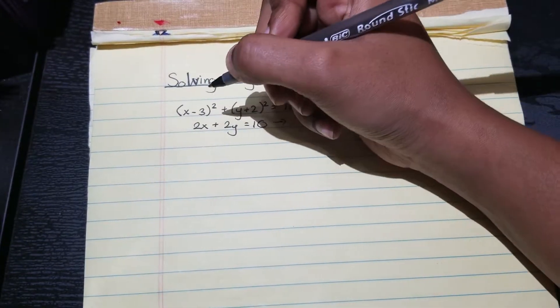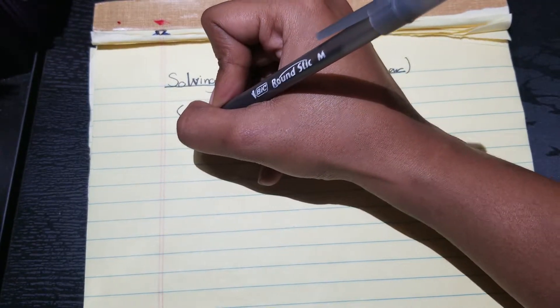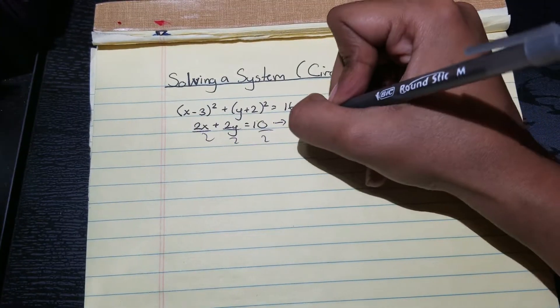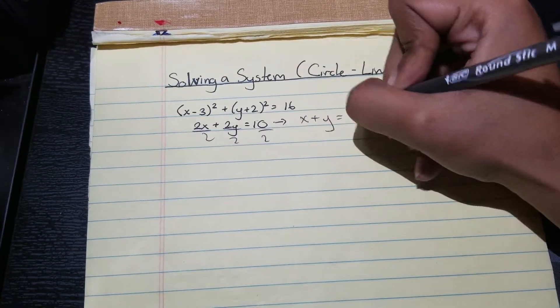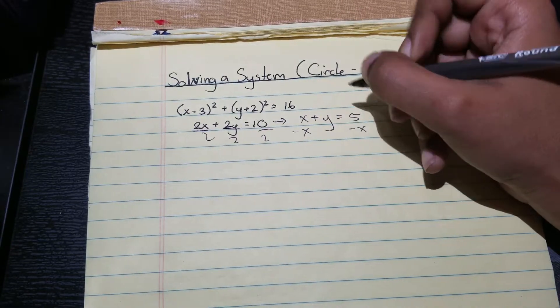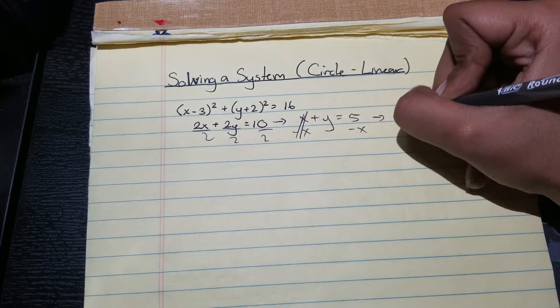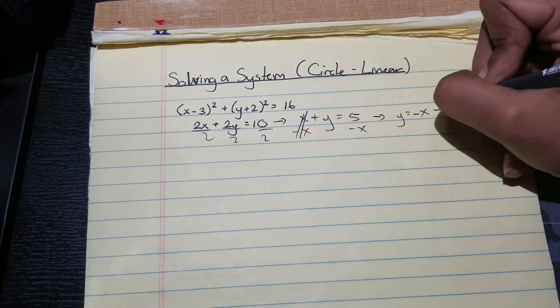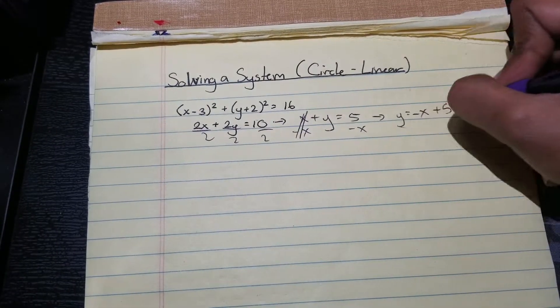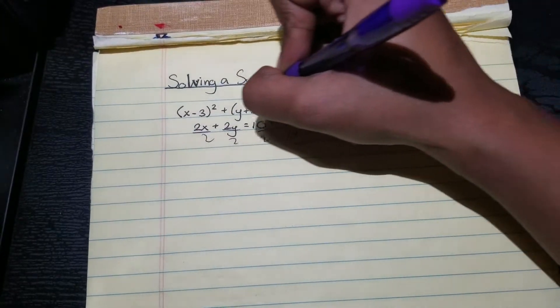So for me, I'm going to substitute the y. So I see that they all have coefficients or numbers that are divisible by two, so I'm going to do that first. Then I get x plus y equals five. And then because I wanted y equals mx plus b form, I'm going to subtract x on both sides, and then I end up with y equals negative x plus five.